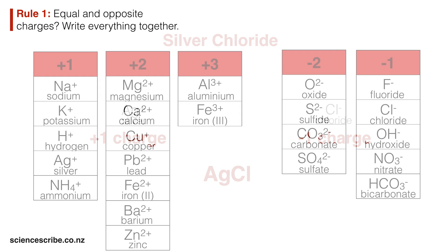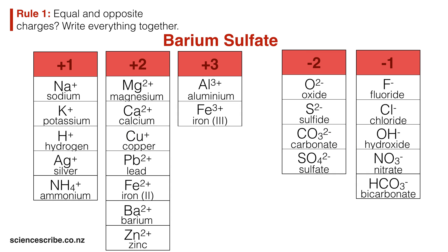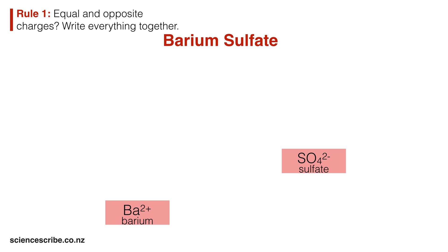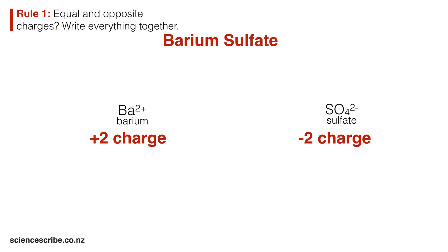Let's look at another example using the same rule — barium sulfate. Just like before, we look for barium and sulfate in the table of ions and compare their charges. They have equal and opposite charges: barium has plus two and sulfate has minus two. When charges are equal and opposite, we just write everything together. Barium is Ba and sulfate is SO4, giving us BaSO4. Notice that in the final formula I don't show the plus two or the minus two charges.